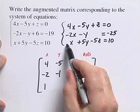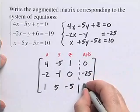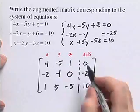Then we get 1, again the implied 1 there, 5, negative 5, and 10. We have our augmented matrix.